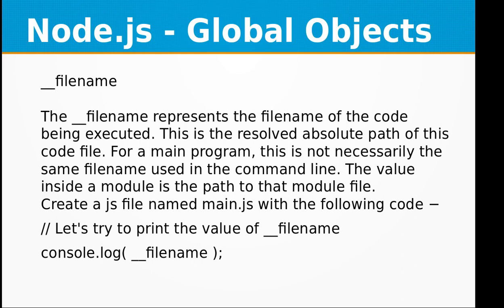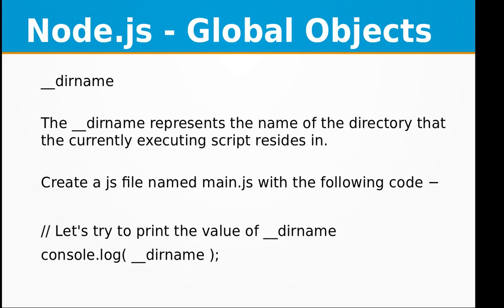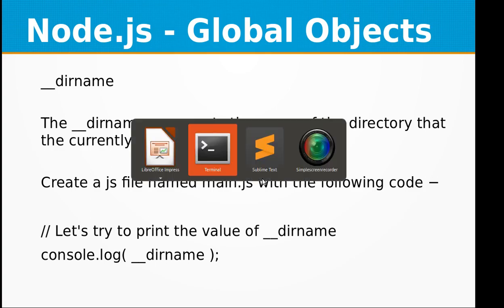The next global object is __dirname. The __dirname represents the name of the directory that the currently executing script resides in. Let's use the same JS file we created for the __filename example and print the value of __dirname this time.